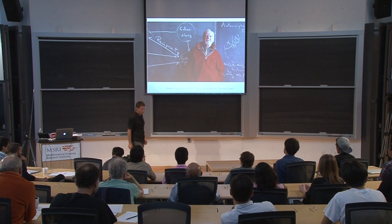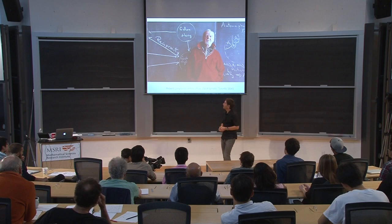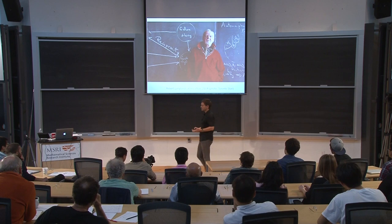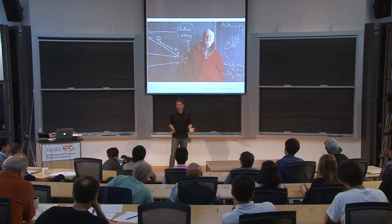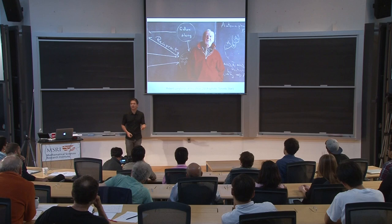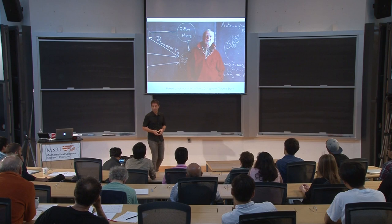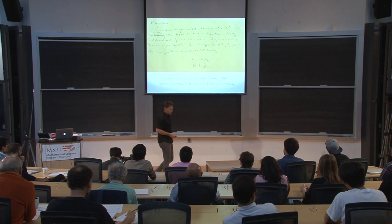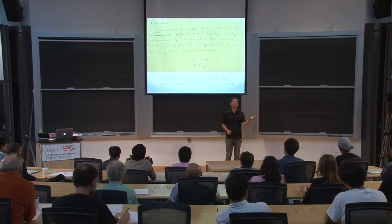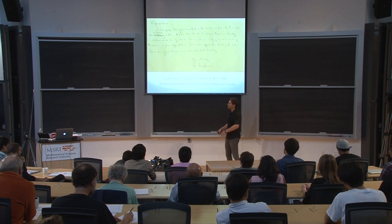The Langlands program, initiated by Robert Langlands — pictured here at his office at the Institute for Advanced Study — aims to unify these continents of mathematics, to build bridges between them and find connections. These connections are expressed by very concrete mathematical statements, like the Shimura-Taniyama-Weil conjecture we discussed last time. Here again is the cover page of the letter from Robert Langlands to André Weil in 1967, in which he first outlined these ideas, almost 50 years ago. A lot of progress has been made, and still so much remains unsolved.